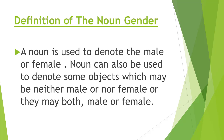First we will know what is noun gender. A noun is used to denote the male or female. A noun can also be used to denote some object which may be neither male nor female, or may be both male or female. We know gender is used in forms — for example, whether it is male or female. But it was also applied to some objects that are not female or male.